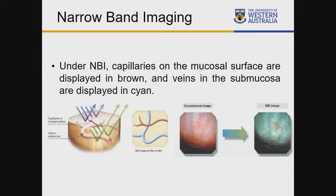NBI is an optical enhancement technology designed to help us see things better. The blue light has superficial penetration and the green light penetrates a little deeper, highlighting different parts of the vasculature. The images are reflected in our eye centered around these so-called brown dots that everyone talks about. Understanding why we see the brown dots is very important if we're to explain and convert people to wanting to use narrowband.